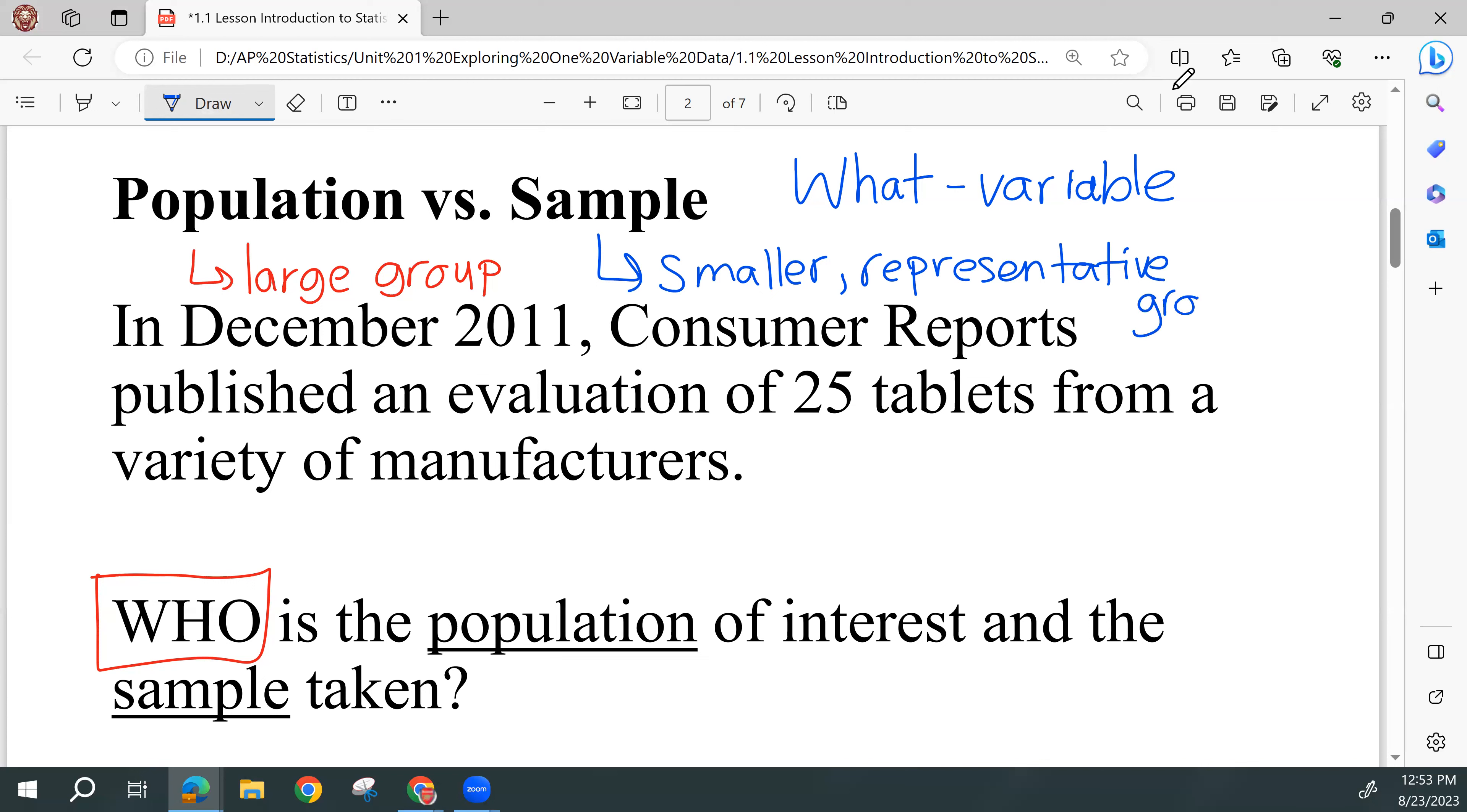So from our population, we use appropriate methods, which we'll talk about, and we sample. And that is a smaller group from our population. It needs to be representative of our population, and that means that every type of different characteristic that might be important needs to be represented. And then we can use that information to now start making some predictions or drawing some conclusions about our larger group, the population.